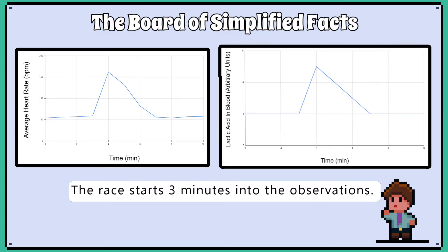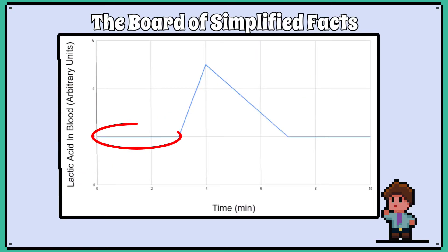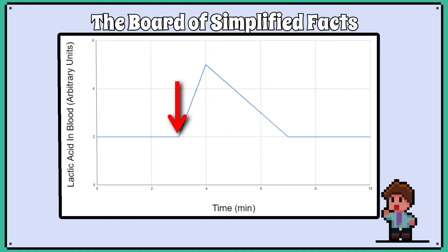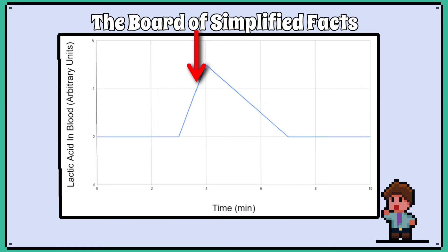We need to explain the data using our knowledge of anaerobic respiration and oxygen debt. Prior to the race starting, we can identify what a normal level of lactic acid is on the graph. Then, at the 3-minute mark, as the race starts, we see a rise in lactic acid in the blood.